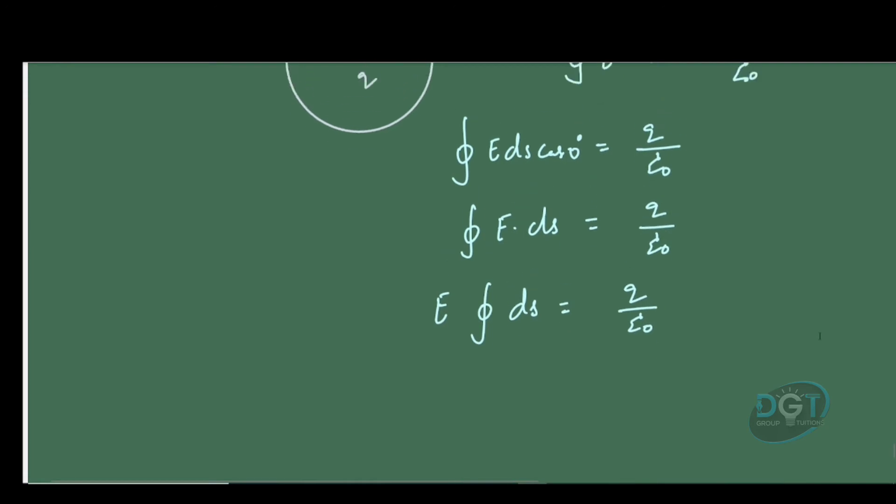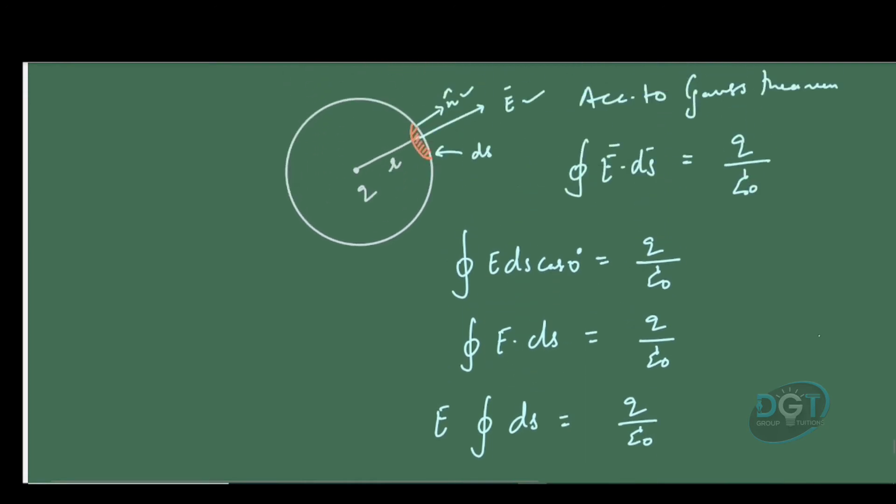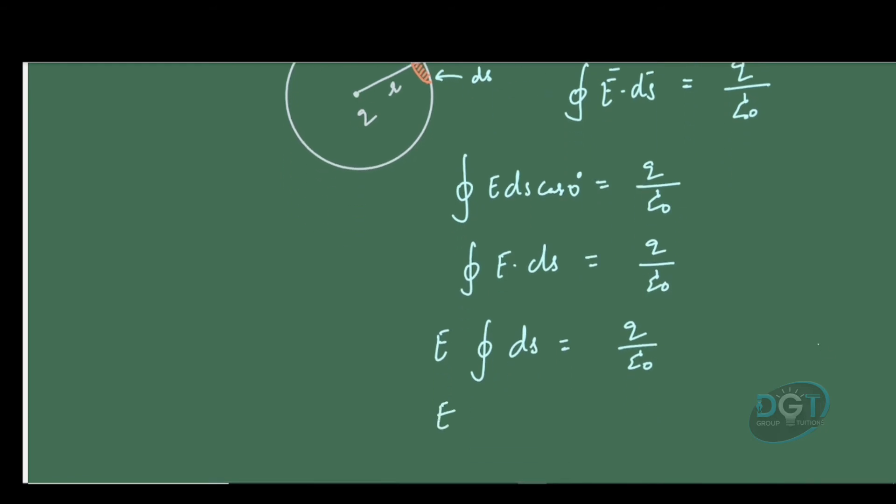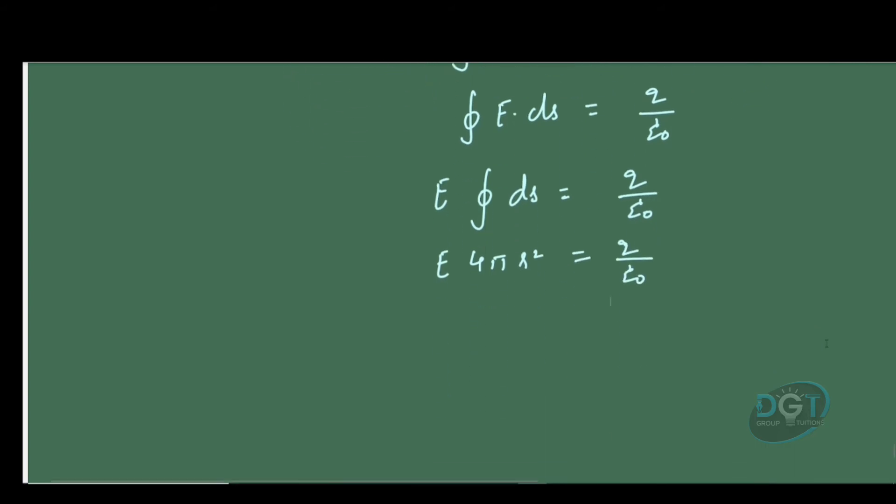The integral of ds gives the total surface area of the sphere, which is 4πR². So we have E·4πR² = q/ε₀, and ultimately the electric field equation is E = q/(4πε₀R²).